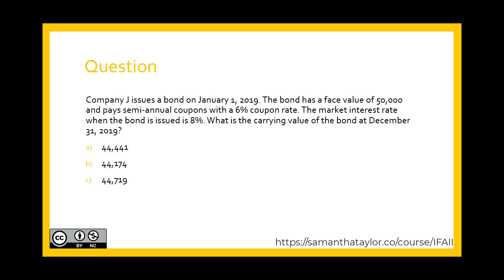Let's do a question. Company J issues a bond on January 1st, 2019. The bond has a face value of $50,000 and pays semi-annual coupons with a 6% coupon rate. The market interest rate when the bond is issued is 8%. What is the carrying value of the bond at December 31st, 2019? Is it A: $44,441? Is it B: $44,174? Or is it C: $44,719?